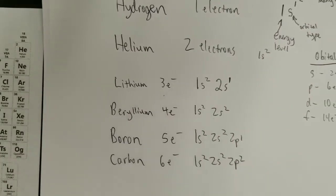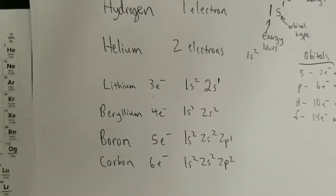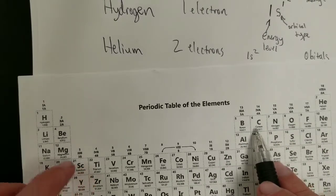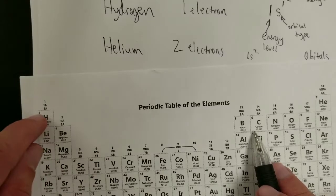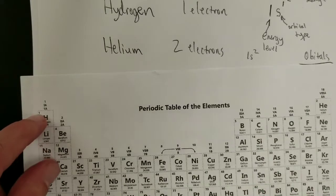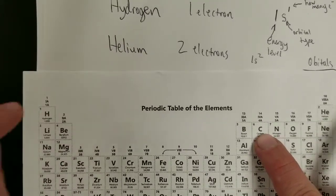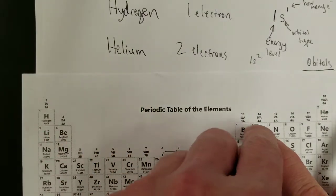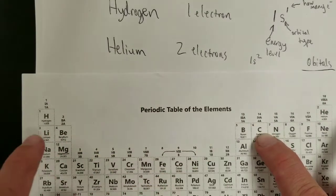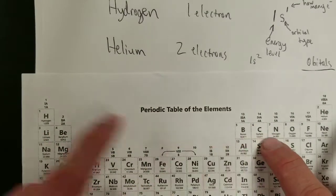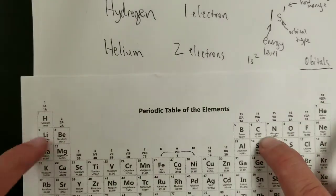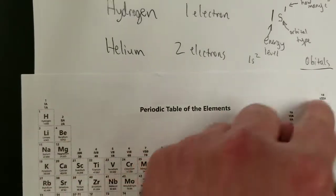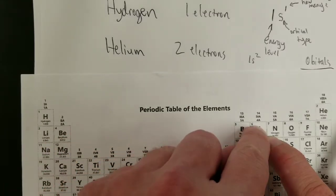This is the pattern that goes on. You can think of it as a road: for any element, start at hydrogen and list which elements you pass through on your way to the element you want to configure. For carbon, that gives 1s2, 2s2, 2p2.